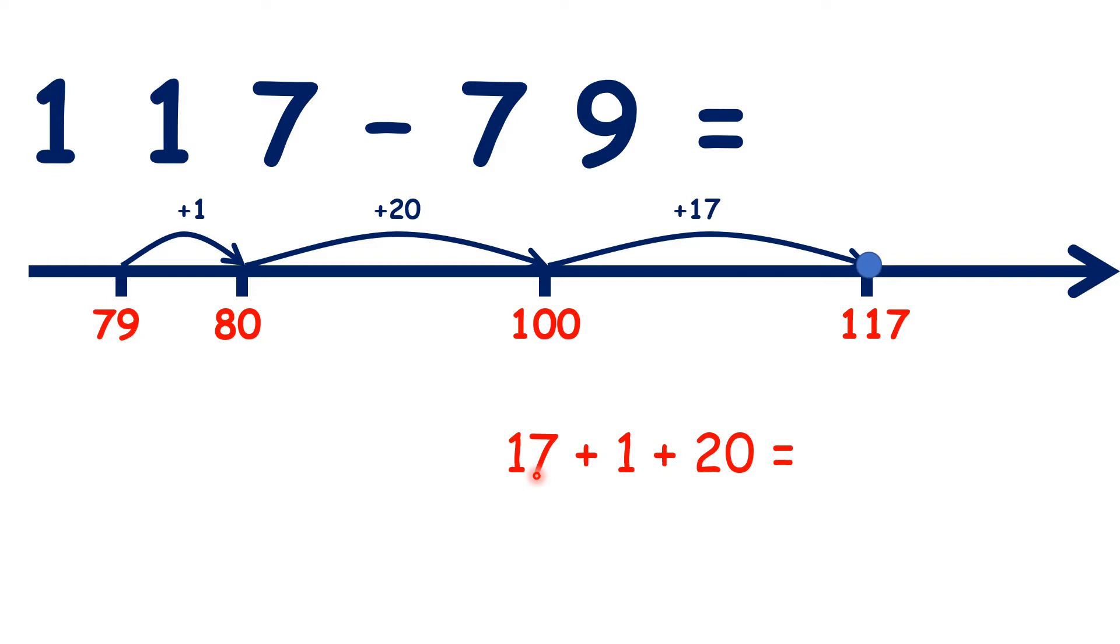I'm going to work out 17 plus 1, and then add 20 at the end. So let's do 18 plus 20, because 17 plus 1 is 18, and adding 20 is easy. 18 plus 20 is 38, so that's our answer.